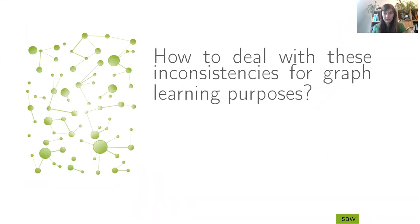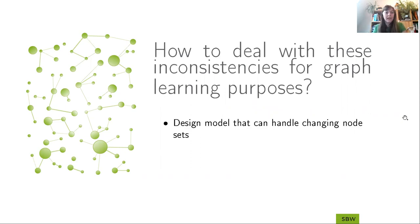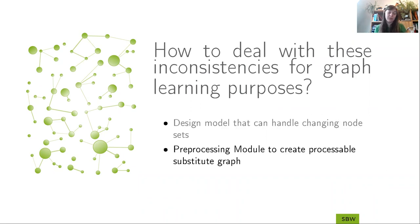So how can we deal with these inconsistencies when we want to learn on such a structural dynamic graph? On the one hand, we can design a model that can handle directly these changing node sets. This is what I'm doing in one part of my PhD. But today I want to show you another part of my PhD, where I designed a pre-processing module that creates a substitute graph of the structural dynamic graph, which can be processed since we have the same node set for each timestamp.